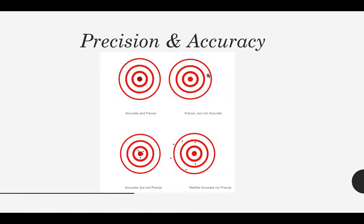In the third diagram, the results are accurate, they agree with the actual results but they are not precise, they are scattered. In the fourth diagram, they are neither accurate nor precise.